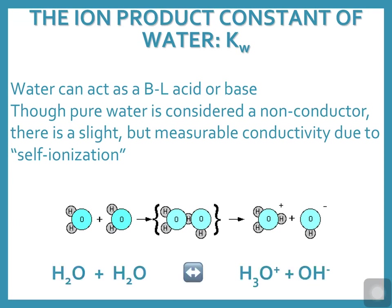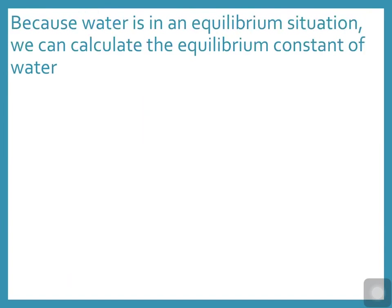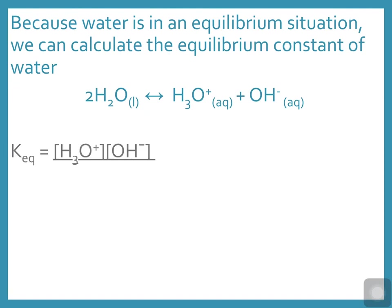If two water molecules combine together to create one hydronium and one hydroxide, we're going to take a look at how much of a sample of water would undergo that self-ionization. We can calculate the equilibrium constant: two water molecules becoming one hydronium ion and one hydroxide ion.